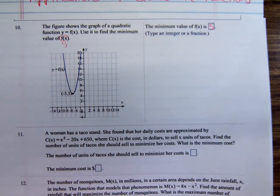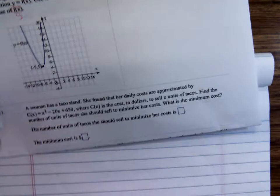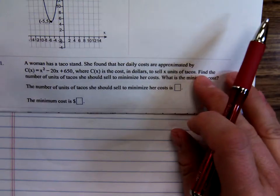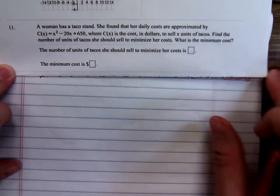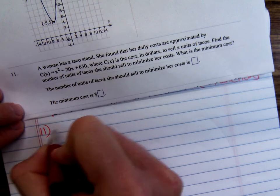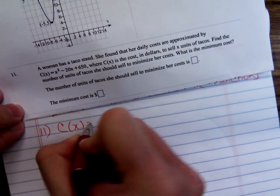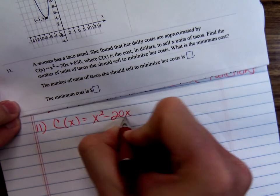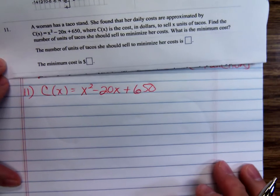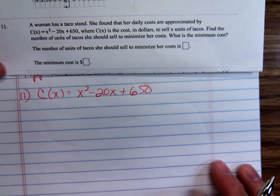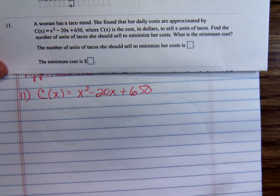Now we're going to do some word problems. A woman has a taco stand, and she's found that her daily costs are approximated by C(x) = x² - 20x + 650. Find the number of units of tacos she should sell to minimize her costs.